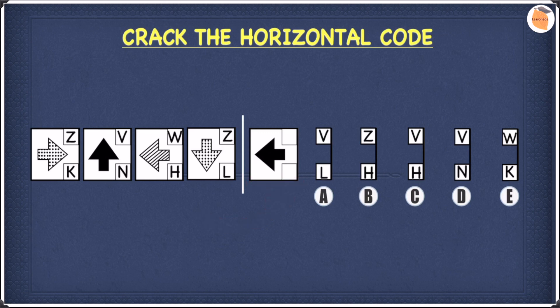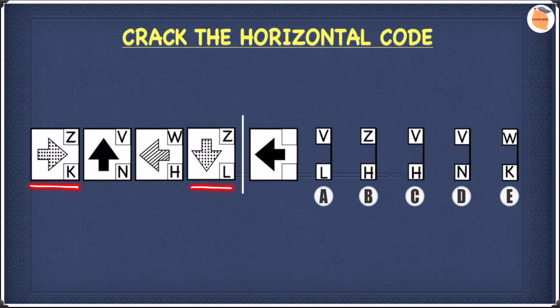Let's start by looking at the top letters which are Z, V, W and Z. As you can see, we have the same letter appearing twice. So this means there's something common between these two shapes. The only thing in common between these two shapes is the fact that they're both spotted. So the pattern for both of these shapes is spotted, meaning the top letter is for the pattern and Z means spotted.